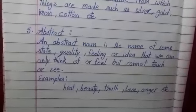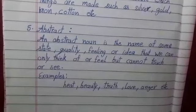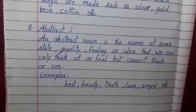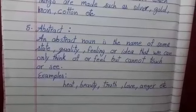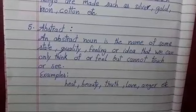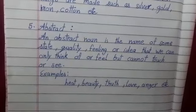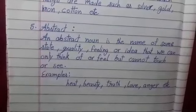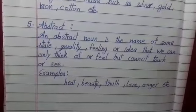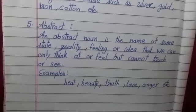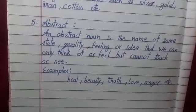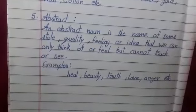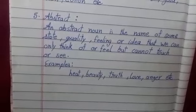For example, we can see our mother — so 'mother' is a noun and a common noun — but we cannot see the love of our mother, yet 'love' is also a noun. We can see a beautiful girl or a beautiful cycle, but we cannot see 'beauty' — yet beauty is a noun. We can see an honest person, but we cannot see 'honesty' — and honesty is also a noun. These are abstract nouns: we cannot see or touch them, but we can feel them.